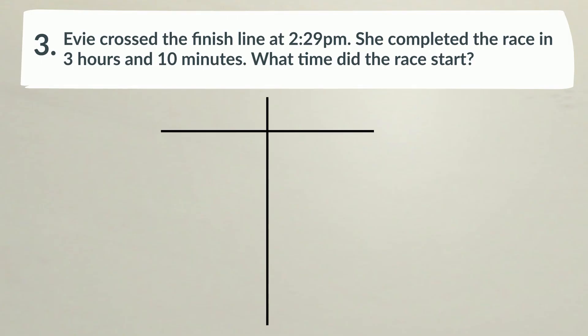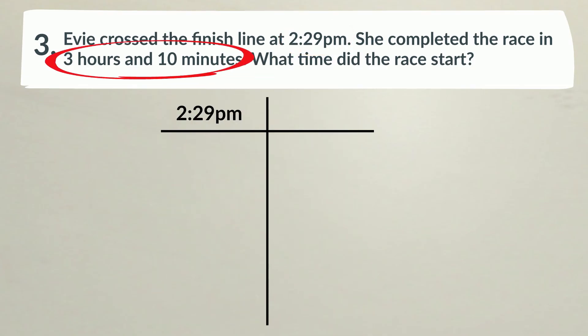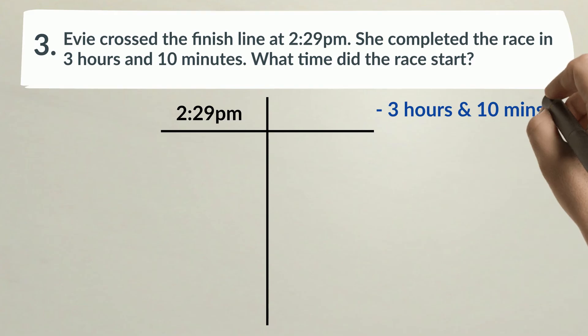We've been given the finish time, 2:29, and the elapsed time, 3 hours and 10 minutes. We need to work backwards to find the start time. That means we'll be subtracting time, rather than adding, as we did in the first two problems.